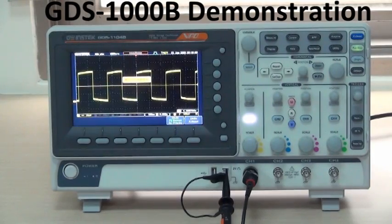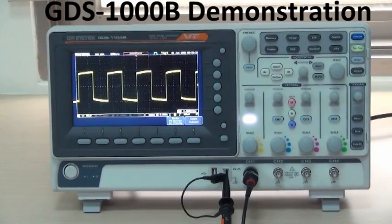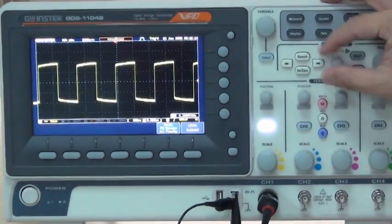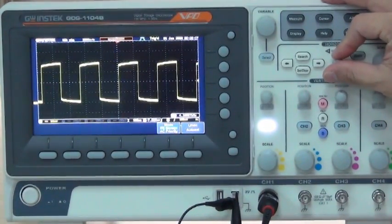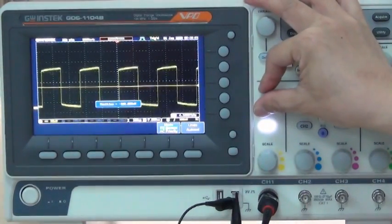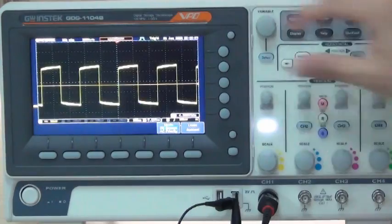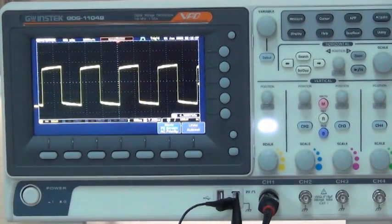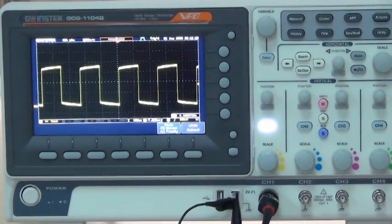Next, use horizontal time scale knob to adjust waveform scale, and turn vertical voltage scale to adjust voltage. When we need the waveform to go back to the original position, press 0 key to send waveform back to its previous position.